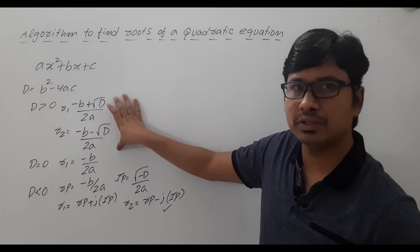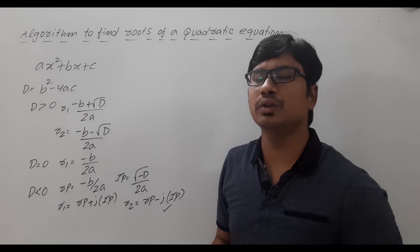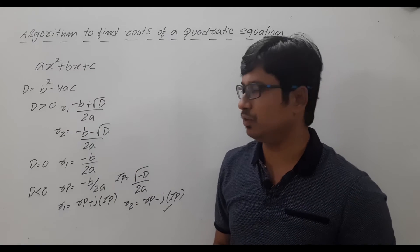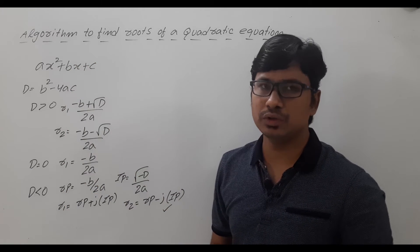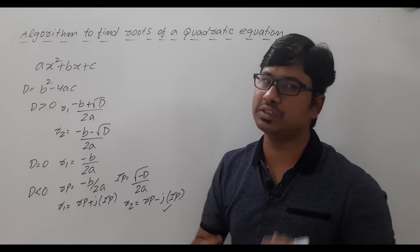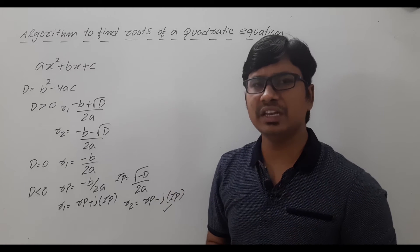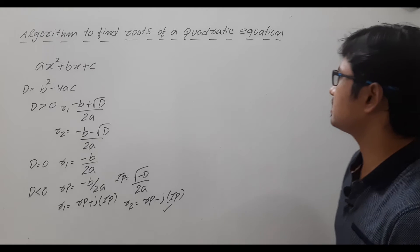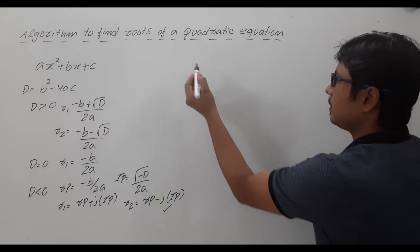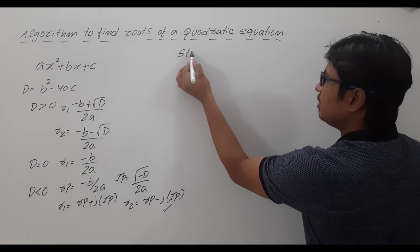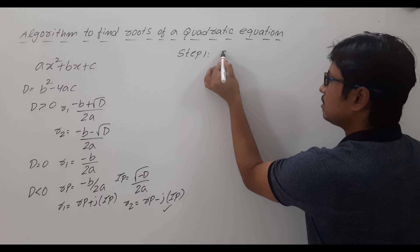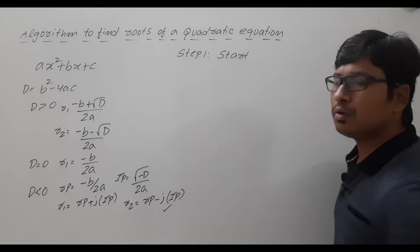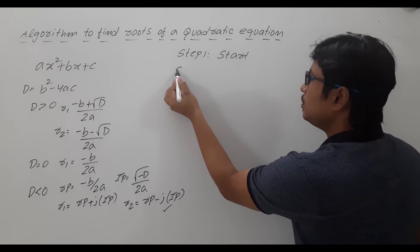If d is equal to 0 the two roots are both equal to −b / 2a, and if d is greater than 0 you have the two real roots. This is the way you find the roots for the quadratic equation. Once you know this solution or procedure to identify the roots, it is very easy to write it as an algorithm. So let me write it as an algorithm.